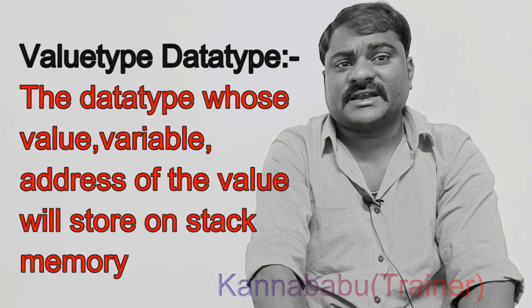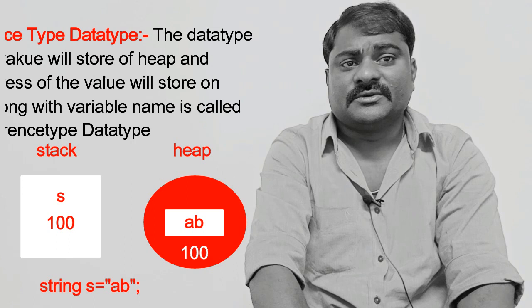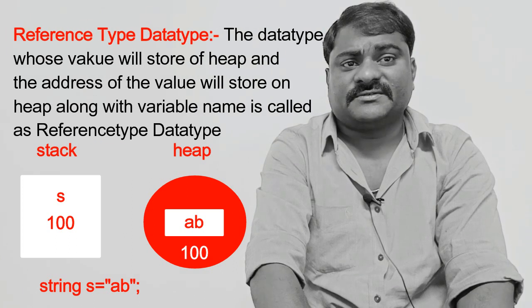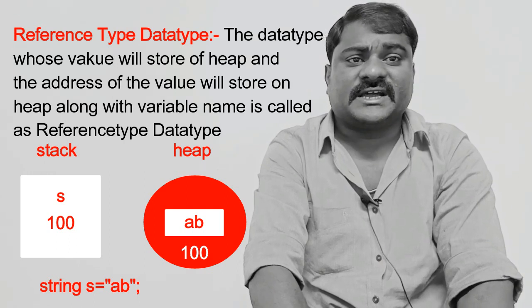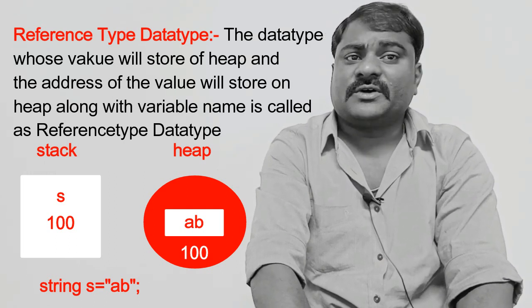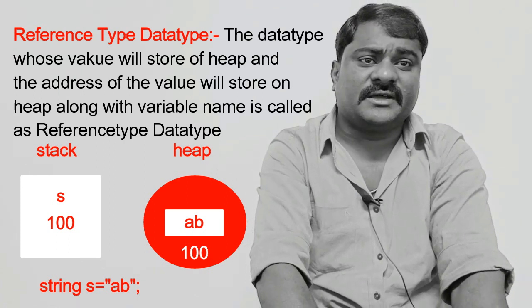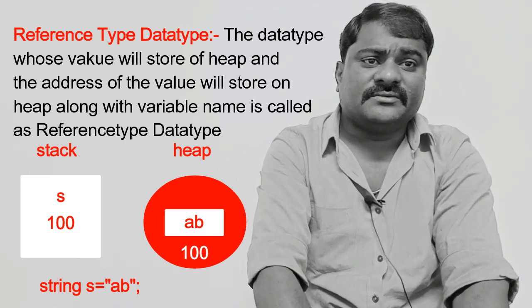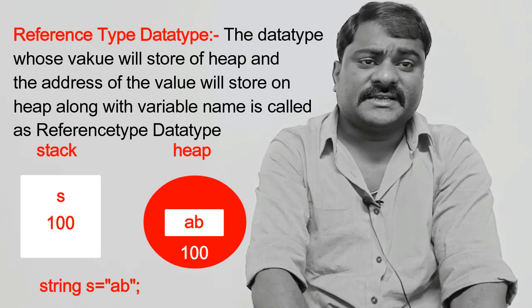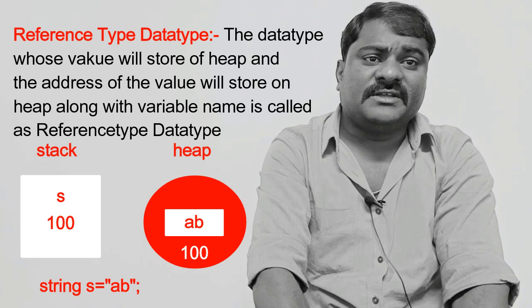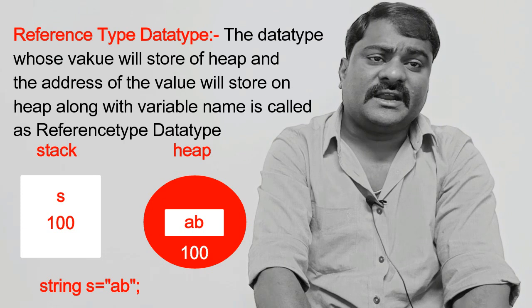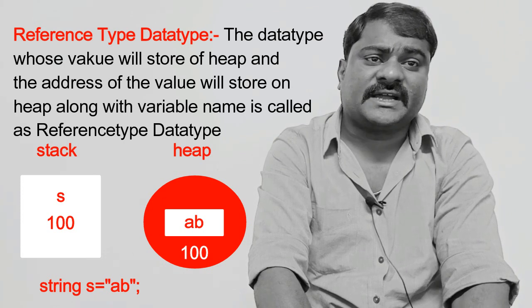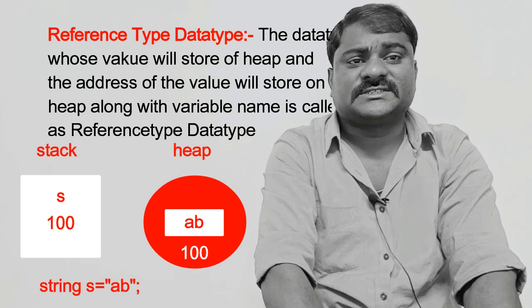Reference type data type memory will be allocated on heap. The data type whose value, variable, and address of the value will be stored on heap memory and the reference will be stored on stack memory. For example, if I declare string S equal to "AB", here AB is the value, S is the reference, and string is the data type. The value AB is stored in heap with some address, say 100, and that address 100 is stored in stack along with the variable name. That is reference type data type.